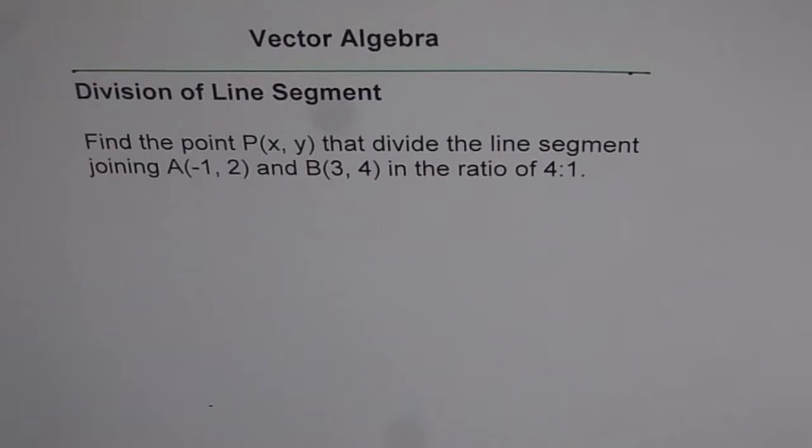find the point P(X, Y) that divides the line segment joining A(-1, 2) and B(3, 4) in the ratio of 4 to 1.